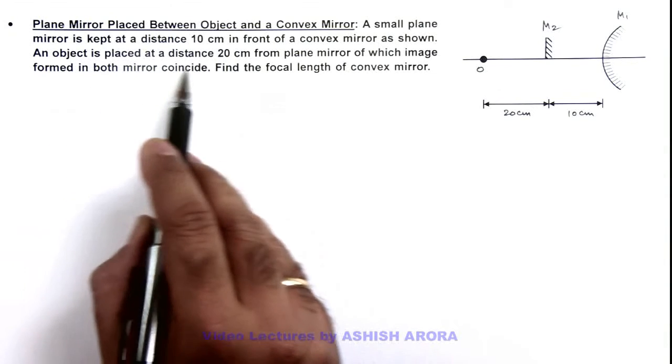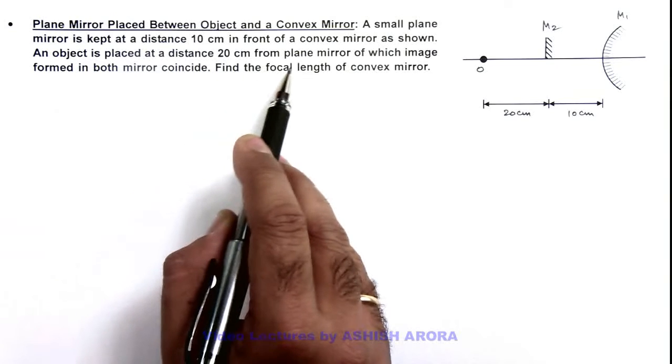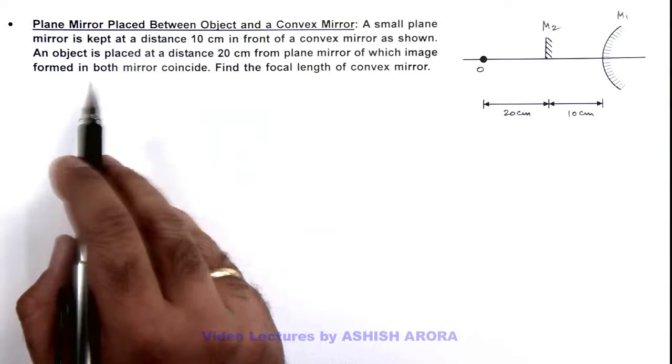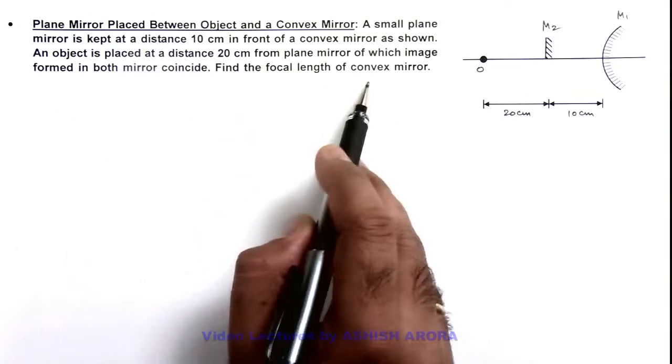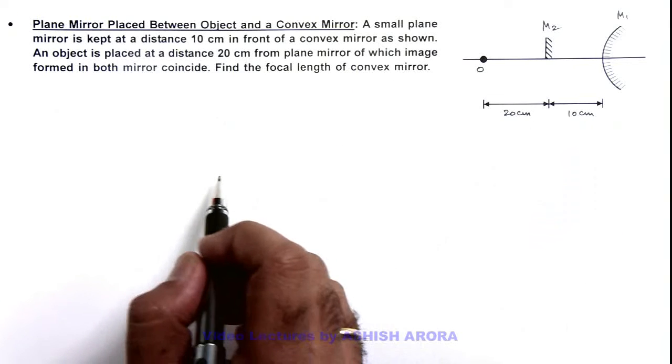An object is placed at a distance of 20 centimeters from the plane mirror, and the images formed in both mirrors coincide. We are required to find the focal length of this convex mirror.